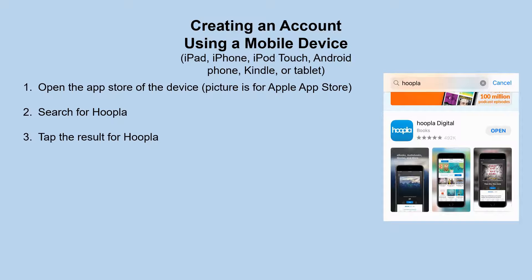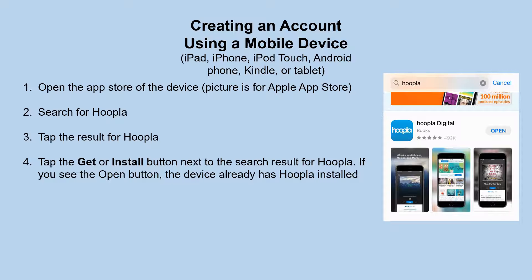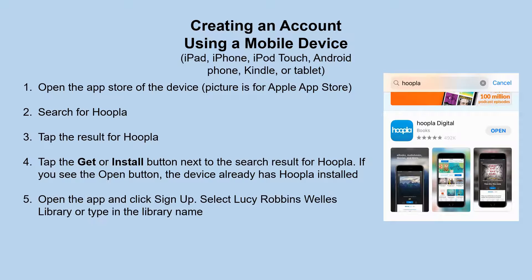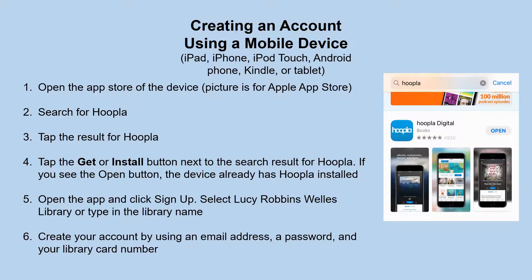In the App Store, search for Hoopla, tap on the result for Hoopla, which is the icon here, and then tap on the Get or Install button next to the search result. If you see that button reads Open instead, the device already has Hoopla installed and you can just open it from there. Open the app and click Sign Up, select Lucy Robbins Wells Library, or type in the library name, or search or select your home library. Create your account by using an email address, password, and library card number, like we just discussed for the browser.